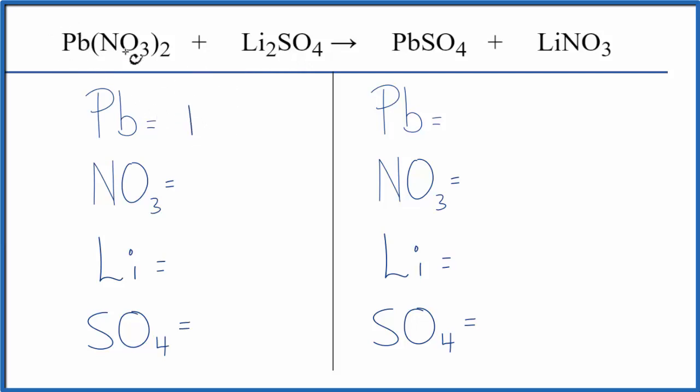Pb, 1, and then NO₃, that's called the nitrate ion. We have 1 here, and it stays together in the chemical reaction. There it is again. So we're going to count this as 1 item. I have 1 nitrate times 2. That gives me 2 nitrates, 2 lithiums.